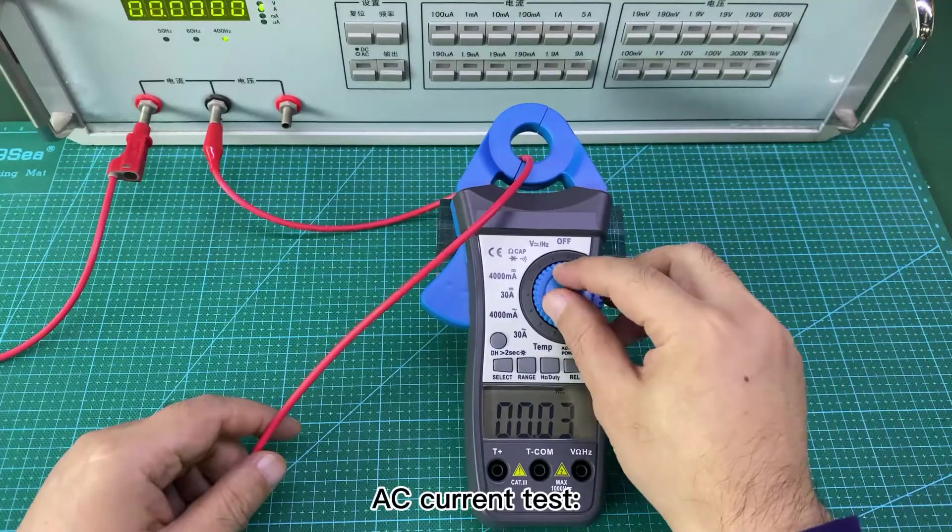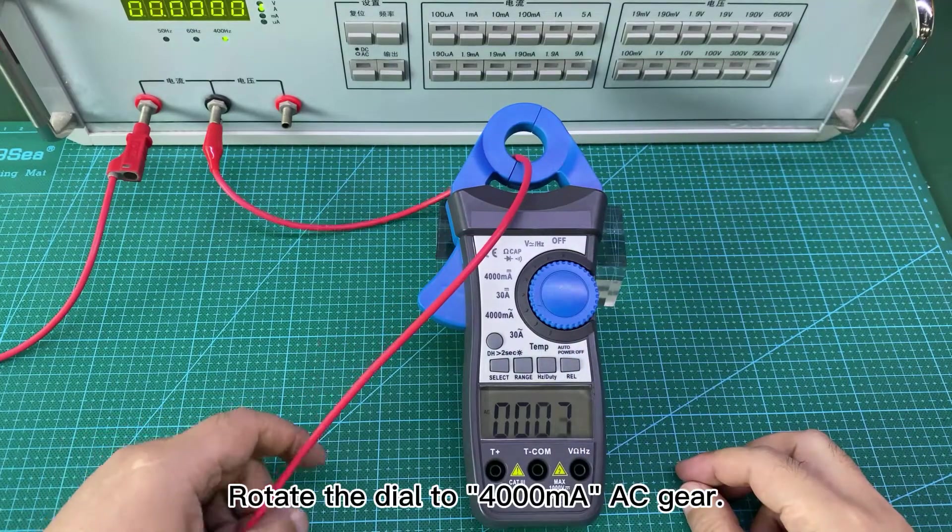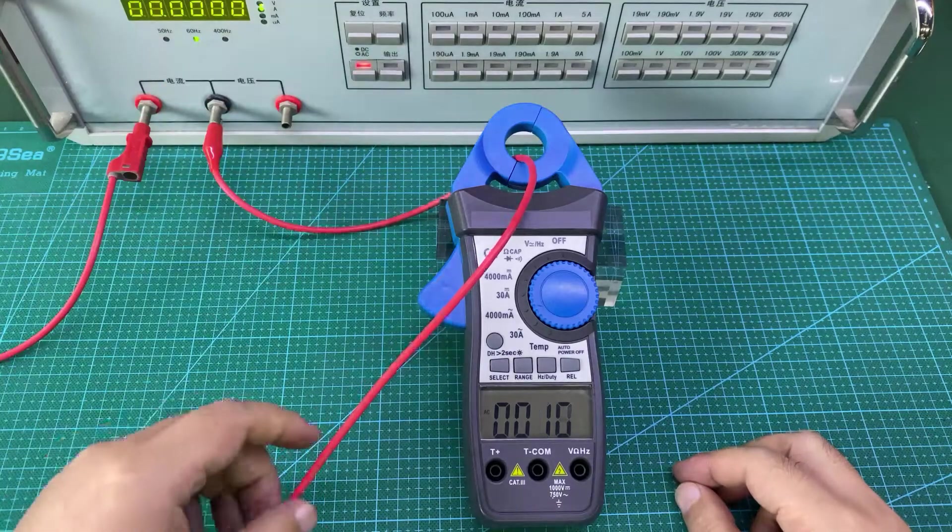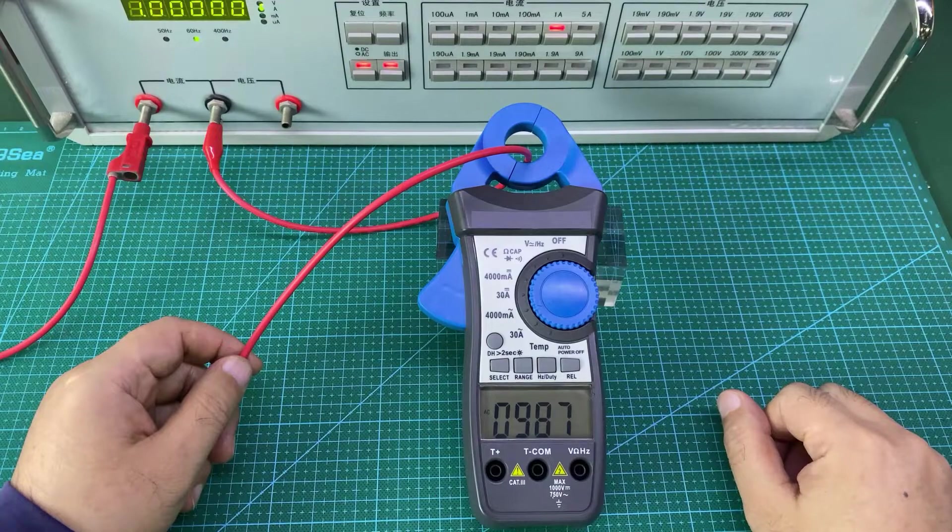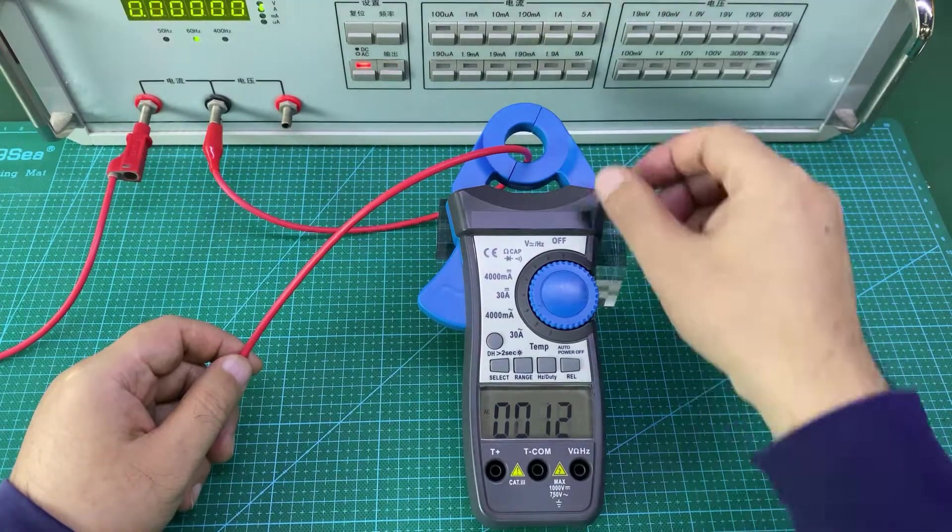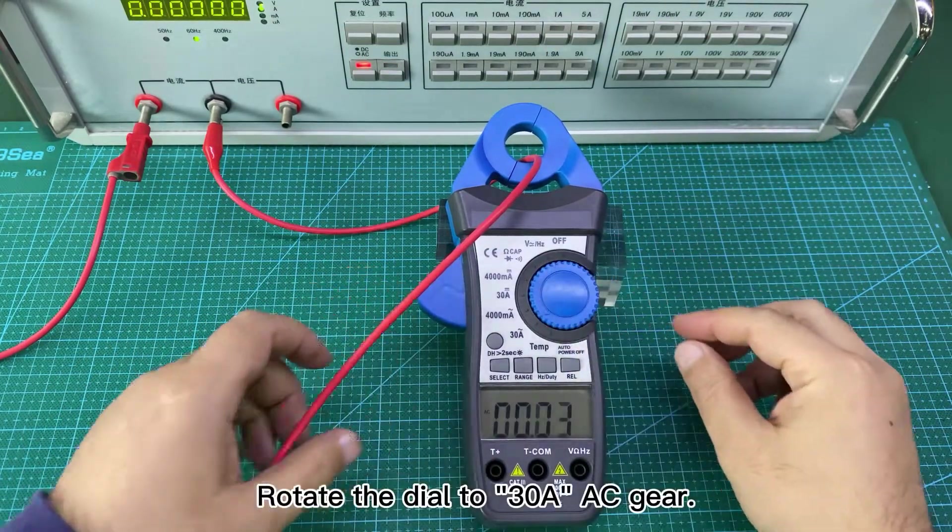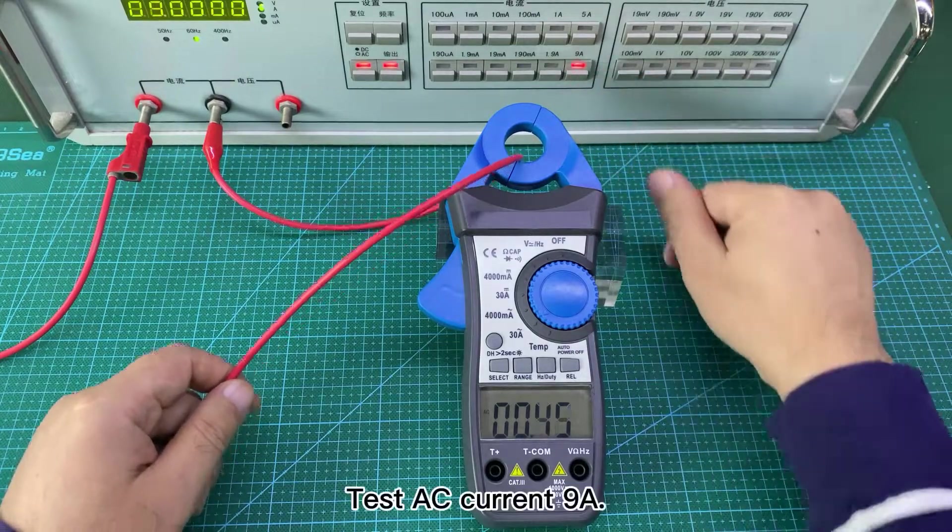AC current test. Test AC current 1A. Rotate the dial to 30A AC gear. Test AC current 9A.